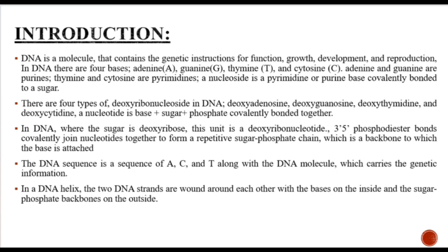Based on their chemical structures, adenine and guanine are classified as purines, while thymine and cytosine are classified as pyrimidines. A nucleoside consists of a purine or pyrimidine base covalently bonded to a sugar molecule. In DNA, the sugar present is called deoxyribose. The four major deoxyribonucleosides found in DNA are deoxyadenosine, deoxyguanosine, deoxythymidine, and deoxycytosine. A nucleotide is a base plus sugar plus phosphate covalently bonded together.